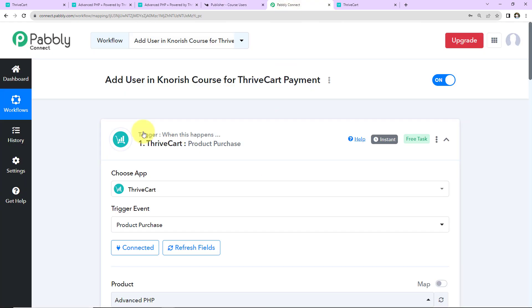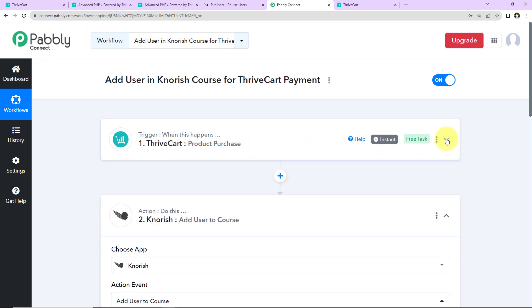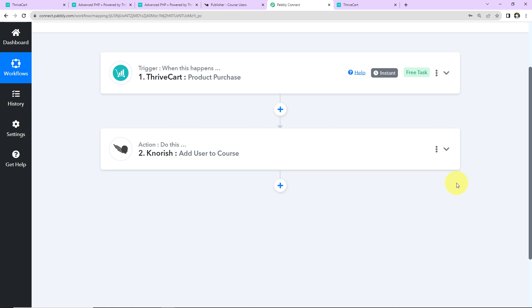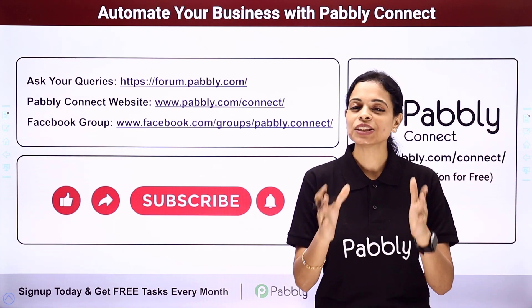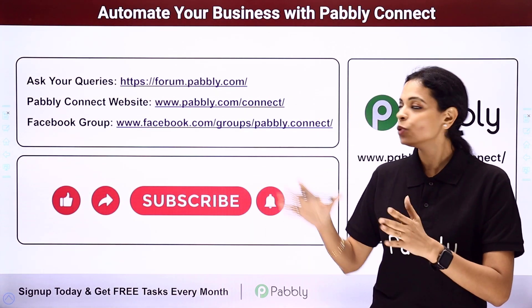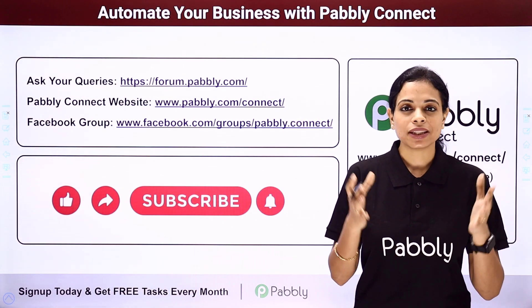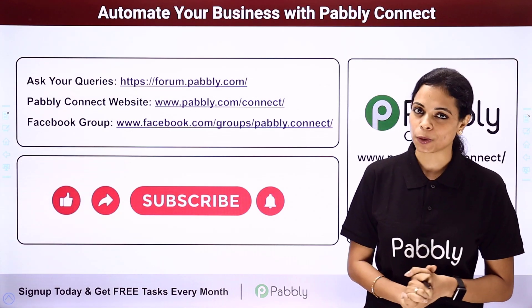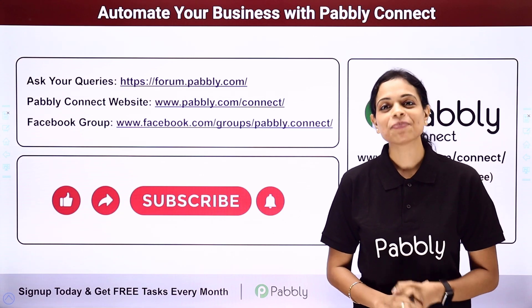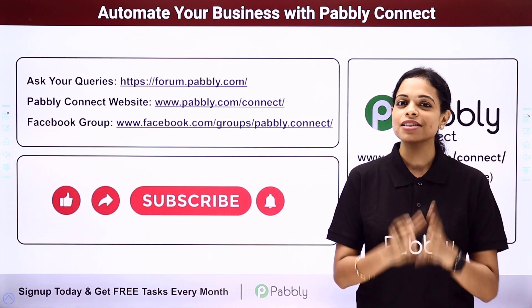Taking you back to Pabbly Connect, let's recap what we have done. Our trigger was Thrivecart with the event Product Purchase, and our action application was Nourish with the event Add User to Course. If you have any doubts, you can refer to the workflow link in the video description and even clone it to start immediately. If you have any specific integration to work on, you can always write to us. You can also integrate multiple applications using Pabbly Connect. For queries, write at forum.pabbly.com or visit www.pabbly.com. For the latest updates on integrations and applications, visit our Facebook group. If you found this video helpful, share it with friends and colleagues. Do not forget to like, share, and subscribe.